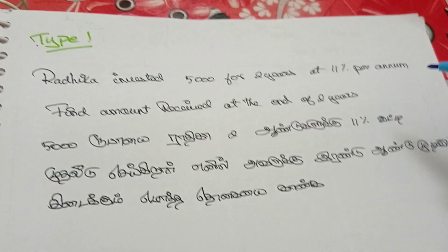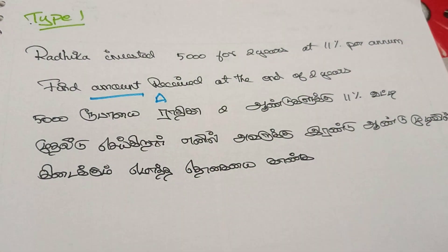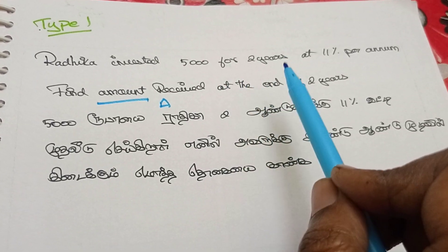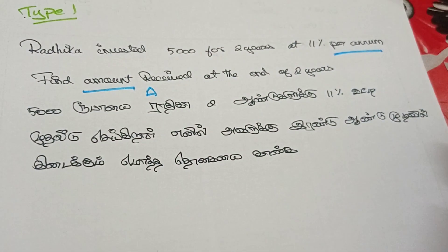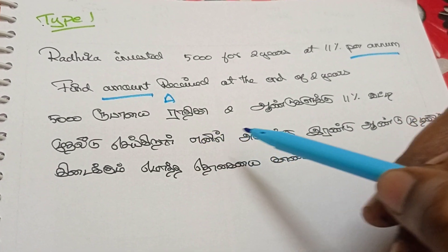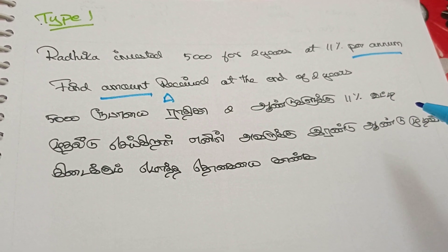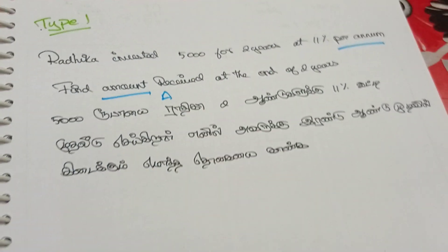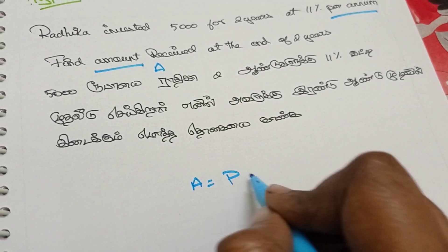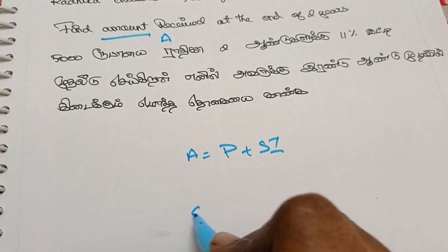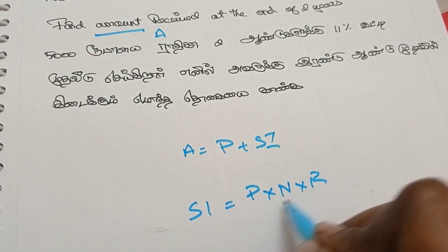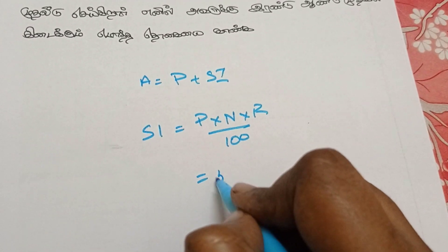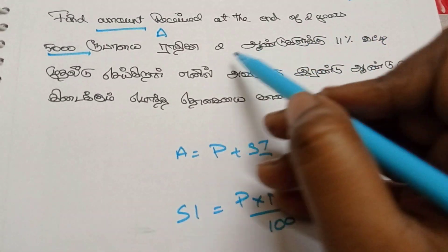Let's talk about a type. The type is SI = PNR. Radhika invested Rs.5,000 for 2 years at 11% per annum. Find the amount received at the end of 2 years. The amount A is equal to P plus SI. The rate is 15% per annum divided by 100.